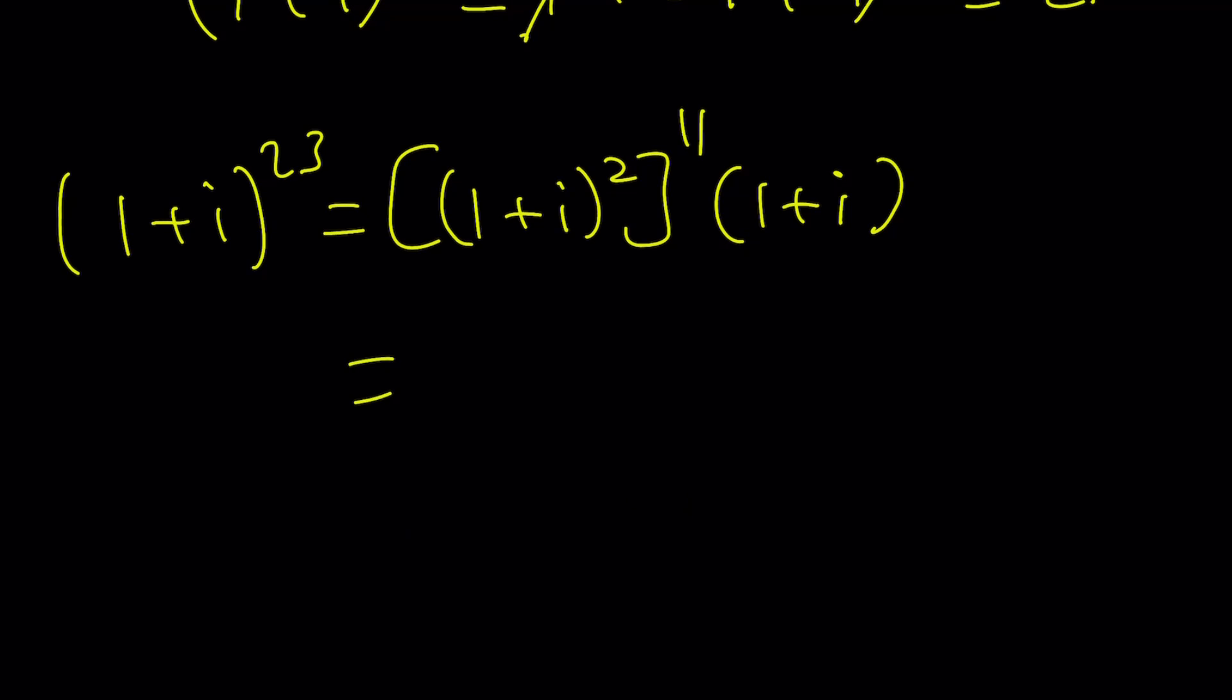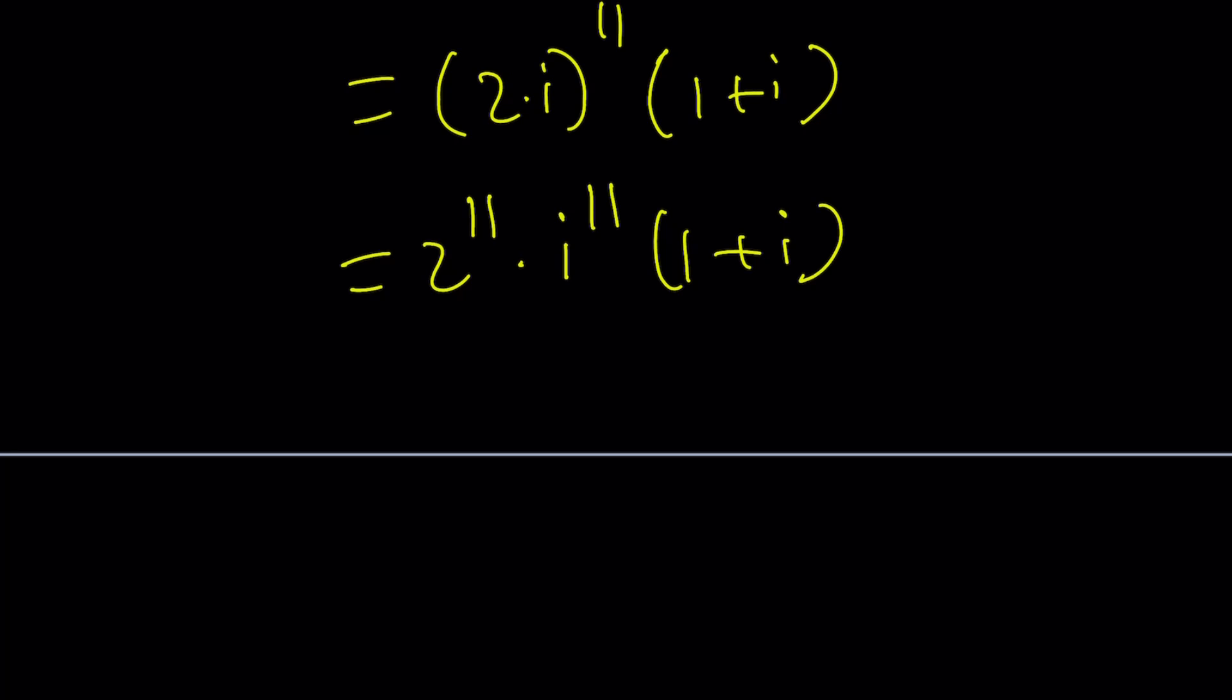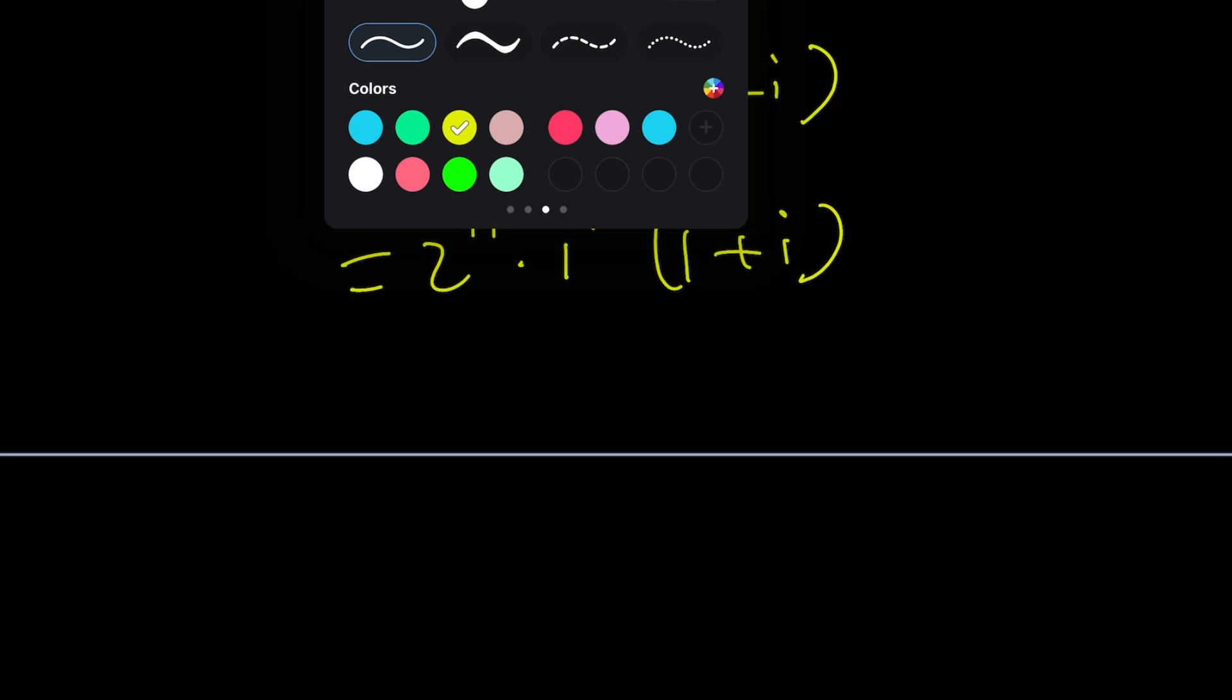1 plus i squared is 2i. Raise it to the 11th power. Super duper easy. What is it? It's a product, so you're just going to do 2 to the 11th times i to the 11th times 1 plus i. But what is i to the 11th power? Let's go ahead and do it on the side. What is i to the 11th?